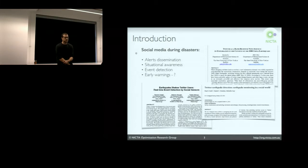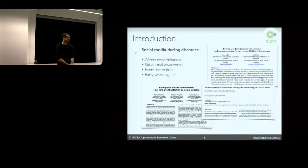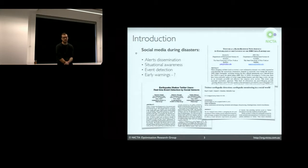The uses of social media broadly fall into several categories. A couple are really obvious: it can be used for alert dissemination, and the most prominent example is the Twitter alert capacity, where responsible agencies like FEMA basically disseminate emergency information broadcasts to subscribed users. The second obvious use is situational awareness, where ground reports get distributed and people get the most urgent and relevant information.